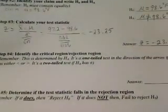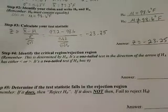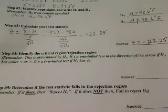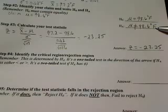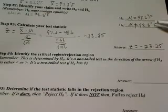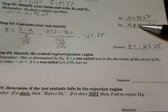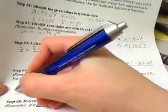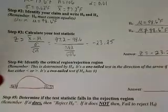Step number four is to identify the critical region, or rejection region. First, we look at the alternative hypothesis to determine if it's a one- or two-tailed test. Since we have 'not equals' in the alternative, it's two-sided — not equals means greater than or less than. So we draw our normal distribution and shade in both the right and left tails. This is a two-tailed test.